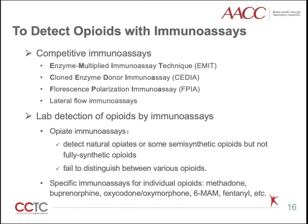The opiate immunoassay targeting the backbone of morphine can detect natural opiates and many semi-synthetic opiates, but not fully-synthetic opiates. Moreover, they cannot distinguish between opiates. For fully-synthetic opiates and poorly cross-reactive semi-synthetic opiates, specific immunoassays targeting individual opiates should be used. For example, immunoassays for methadone, buprenorphine, oxycodone, oxymorphone, 6-MAM, and fentanyl are commonly included in the urine drug screening list.